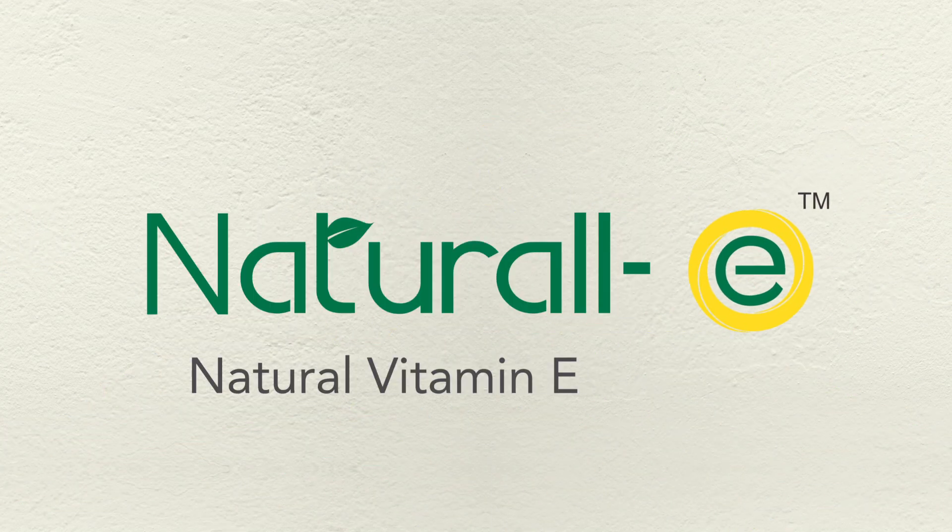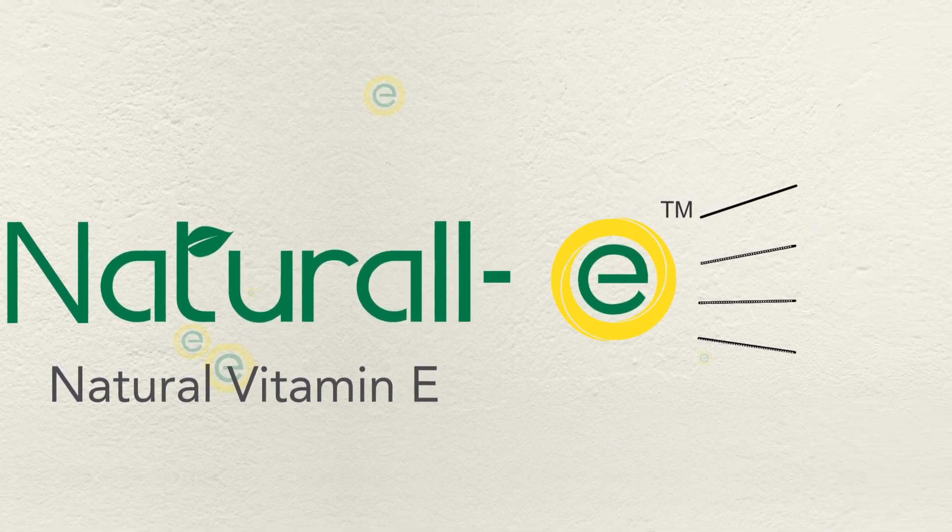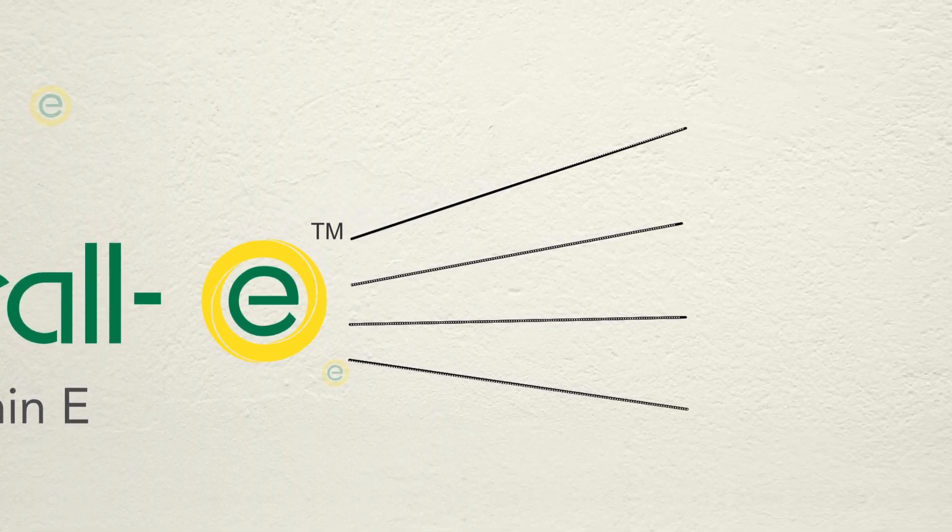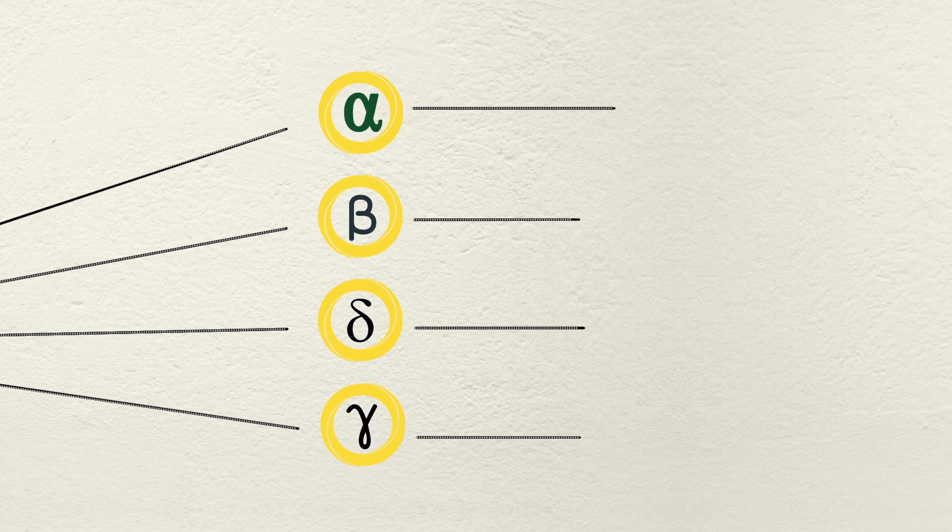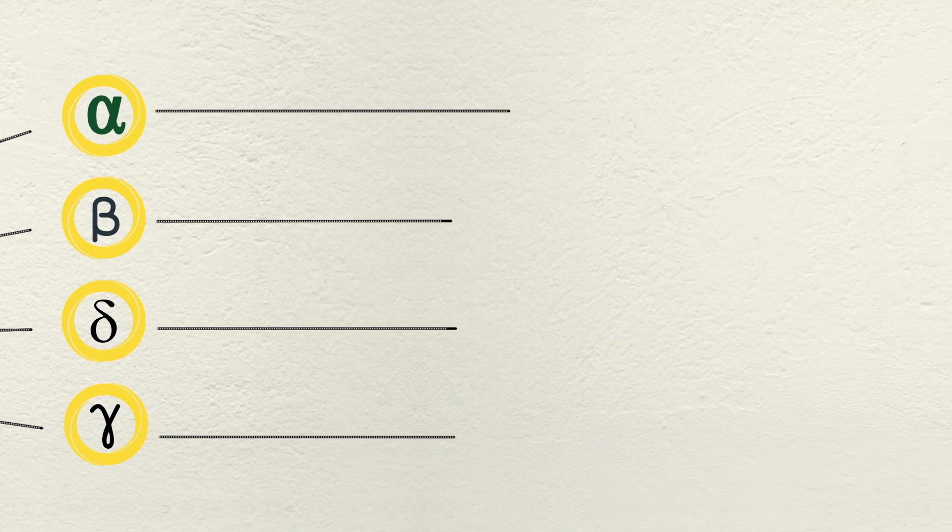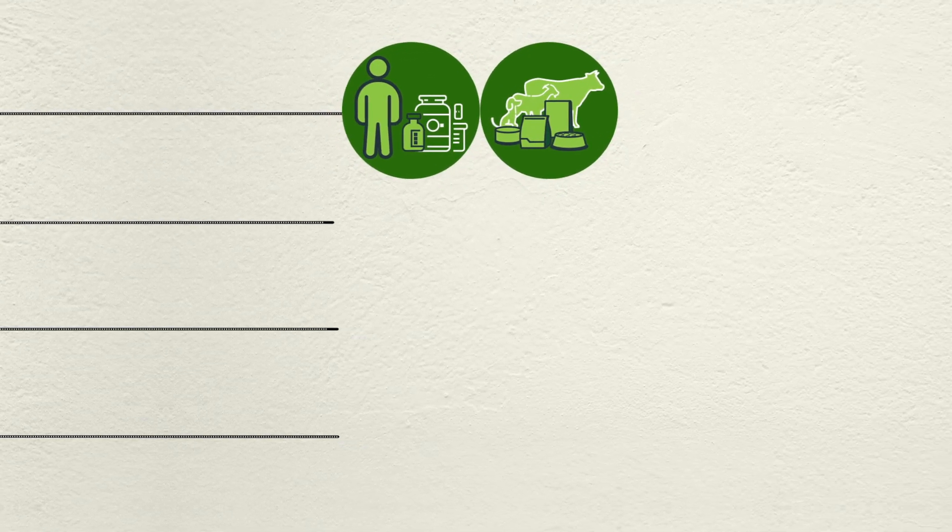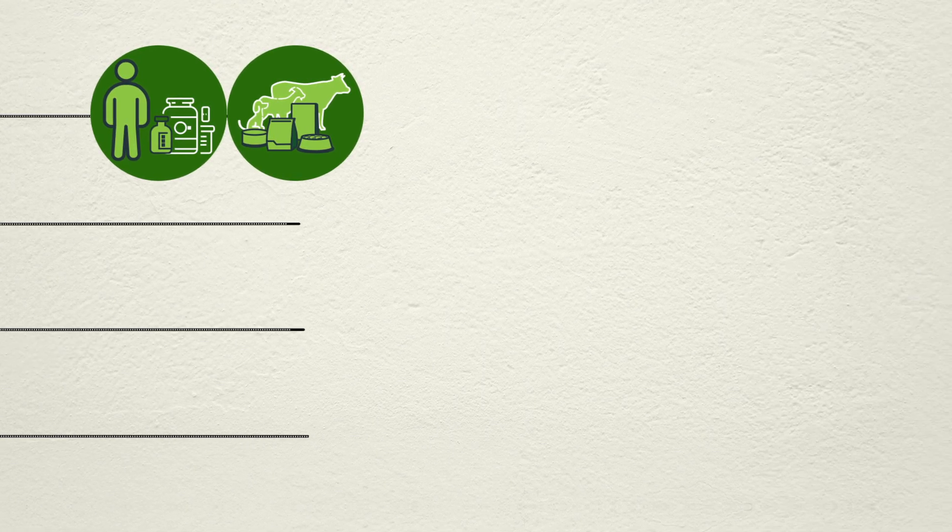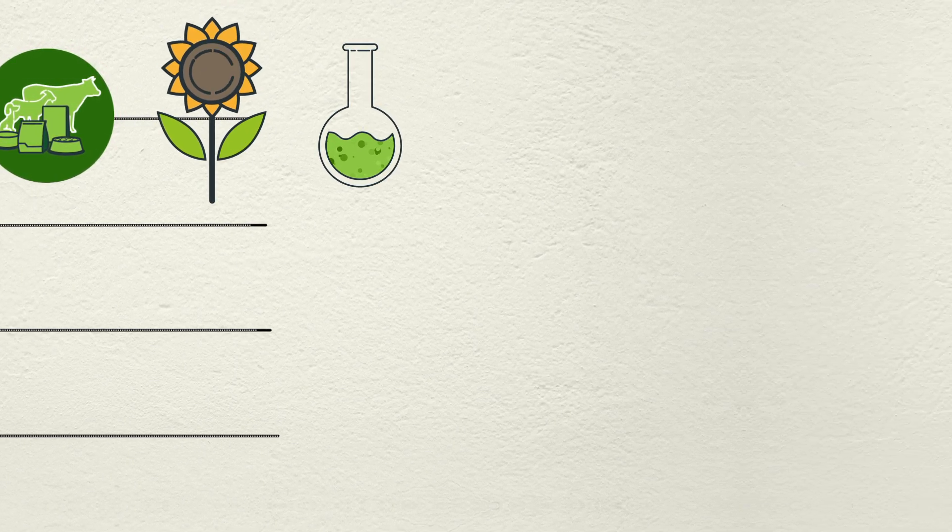Natural E is our range of natural tocopherols. Natural E is composed of four isomers. The alpha isomer is a known source of vitamin E, useful in human and animal nutrition applications. These are derived from sunflower and rapeseed oil distillates.